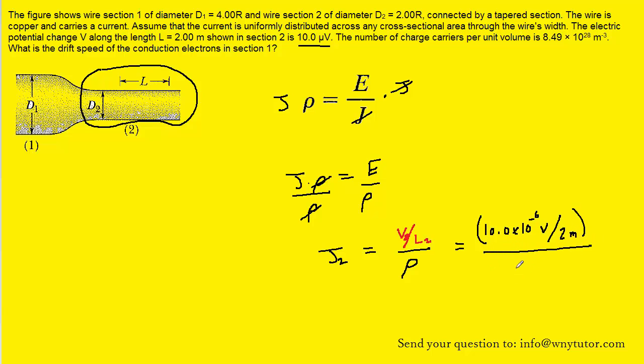Then we'll divide that quantity by the resistivity of copper. Now you'd have to go back into the chapter of the textbook and look up the resistivity of copper. If you do that, you will find a value of 1.69 times 10 to the minus eighth ohm meters. So we can plug this into our calculator and that's going to allow us to find the current density in section 2 of the wire.